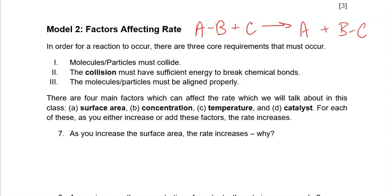The third requirement is that the collision needs to happen at a proper alignment. For example, if C comes around and hits on the A side, it's not going to work. So you must have a collision, that collision must have sufficient energy, and you need proper alignment.